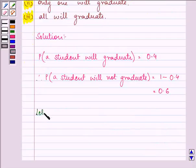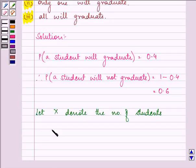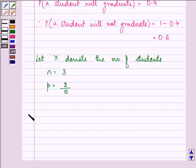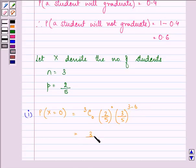Let x denote the number of students. Now for the first one, we need to find the probability that none will graduate, meaning x equals 0. That will be 3C0 times (2/5)^0, so we are left with (3/5)^(3-0), which equals (3/5)^2.